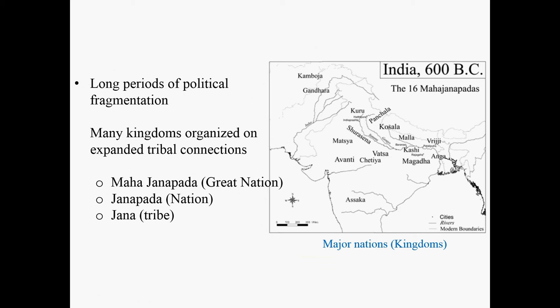Politically, we see a long period of political fragmentation in ancient South Asia — very different from ancient Chinese history, where we see long-lasting dynasties and empires one after another. In South Asia we see fragmentation. This map shows that around 600 BC in northern and part of central India, the land was divided among 16 major nation-based kingdoms, which really illustrates the political fragmentation of the region.